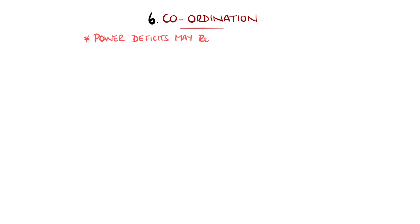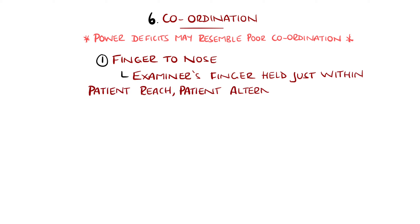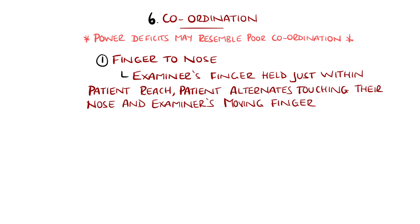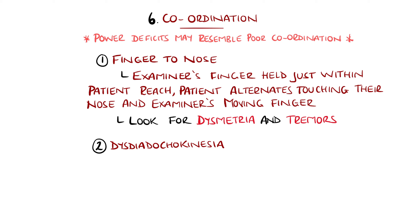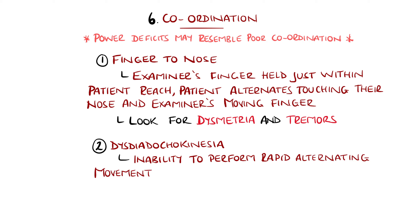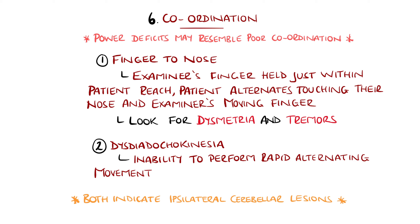Next is coordination. Be sure to have checked power before this, as weakness can present as poor coordination that could otherwise be attributed to cerebellar lesions. Tests include the finger-to-nose test, where the patient is asked to touch their nose and then the examiner's finger — placed just within reach and moved from side to side — observing for dysmetria (missing by under or overshooting) and any tremors appearing as the finger approaches. Dysdiadochokinesia, the inability to perform rapid alternating movements, is tested by asking the patient to rapidly lay their right palm on top of the left, then flip the right hand so the dorsum touches the left palm, repeating multiple times on both sides. Both tests indicate possible cerebellar lesions on the same side as the affected limb.